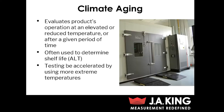Now let's talk about the first type of environmental testing, which is climate aging. Climate aging is used to evaluate a product's operation at an elevated or reduced temperature, or it can also be used to evaluate a product's operation after a given period of time. You may want to see how your product operates at a high or low temperature when it's actually in the chamber, or you might want to expose your part to these extreme temperatures for a given period of time to see what kind of permanent effects it's going to have and perform that operational testing after the aging period.